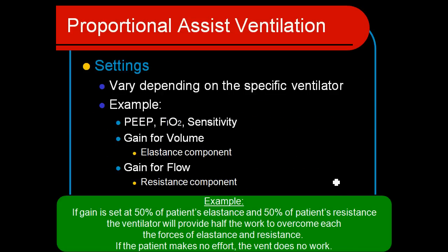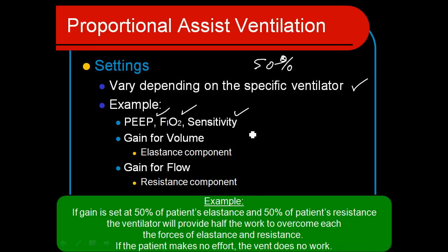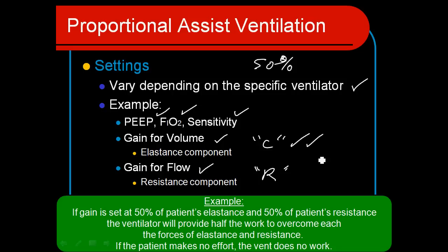Deciding what the patient needs can be quite a challenge. The settings vary dramatically depending on the specific manufacturer. In some cases, the only thing you do is set the amount of work you want the patient to do — something like a control that says 50%, or a ramping control. There are quite a few different ways manufacturers are controlling this mode. Generally speaking, we do set a PEEP and FiO2, and of course a sensitivity. Then there's a gain, and many manufacturers are incorporating controls where you can set different components depending on whether you want to overcome elastance, which is basically compliance, or resistance — whichever is causing most of the work of breathing. Often it's more the compliance problem, but we have these controls that allow us to target either one.